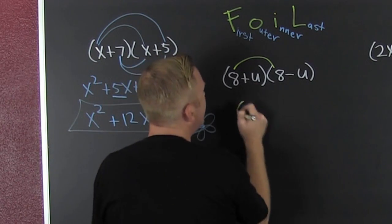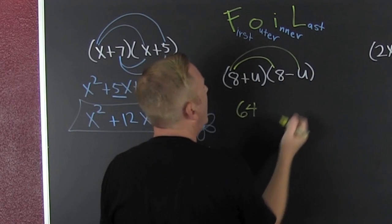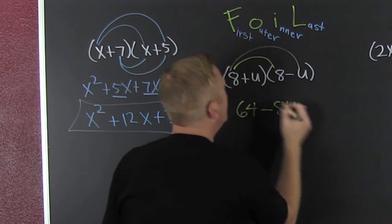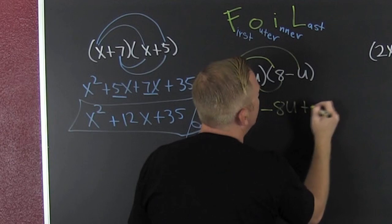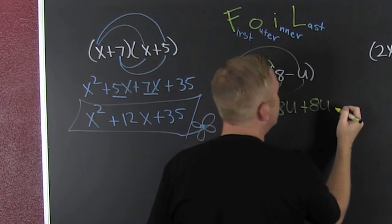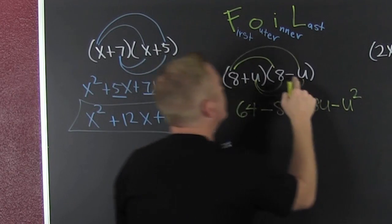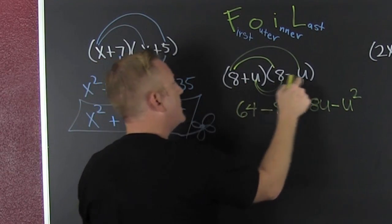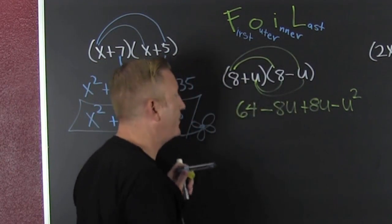We first — that's 64. And then we outer — minus 8u. And then we inner — that's plus 8u. And then we last — that's minus u squared, because minus times plus is minus, and u times u is u squared. And then we gather, collect, and combine.